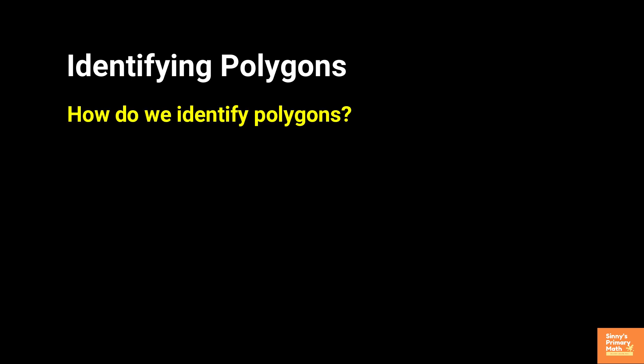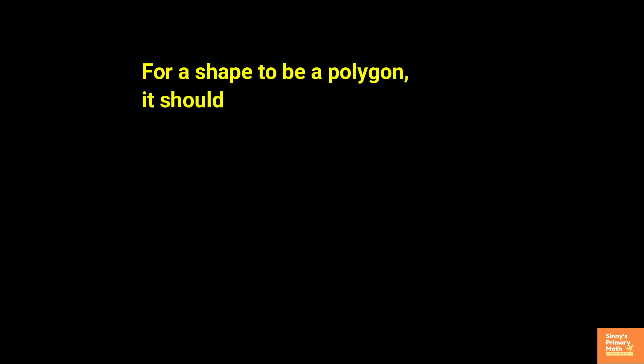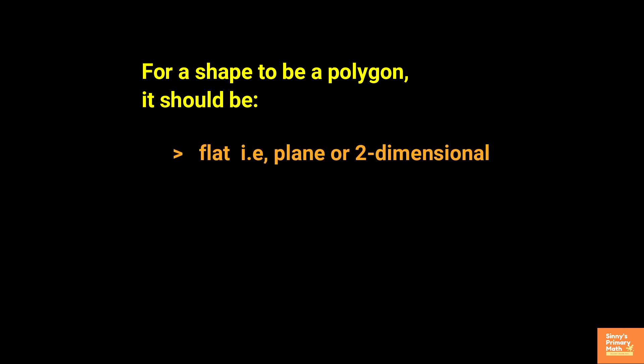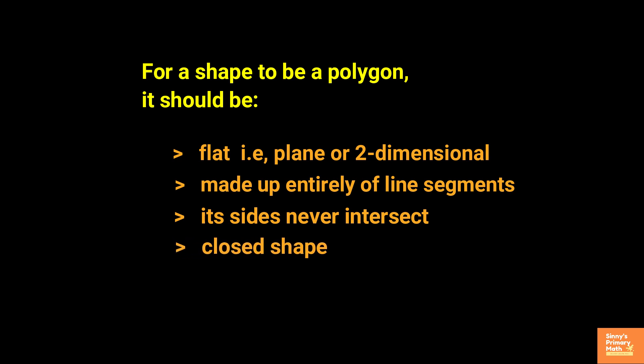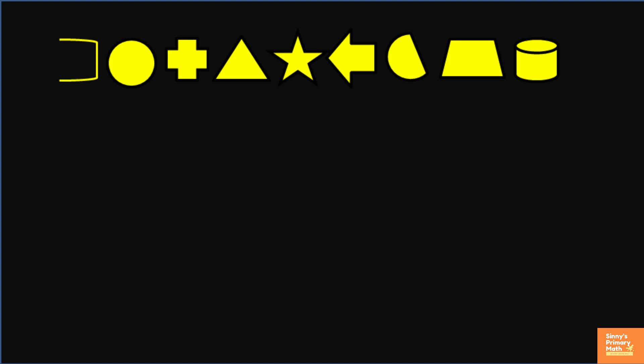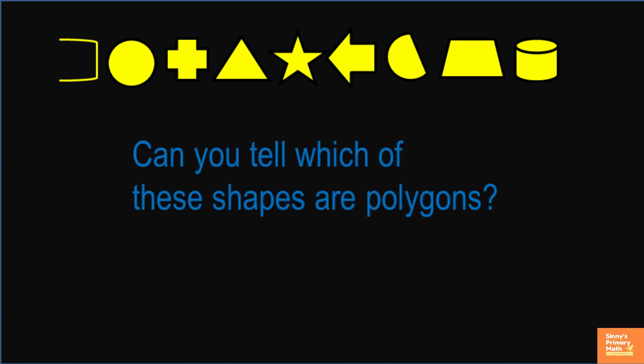Identifying polygons. We come across a variety of shapes. How do we identify a polygon? For a shape to be a polygon, it should have some specific features: it should be flat, plane, or two-dimensional; made up entirely of line segments; its sides never intersect; and it must be a closed shape. Now look at the shapes shown — can you tell which of these shapes are polygons?